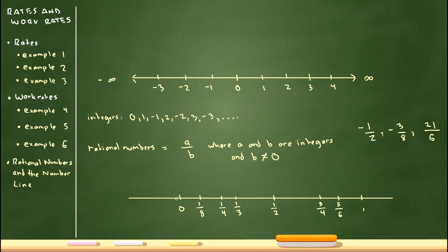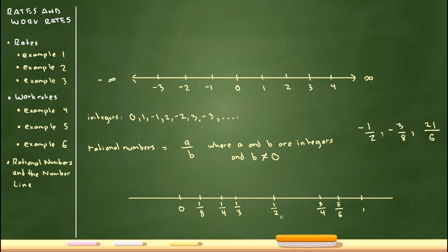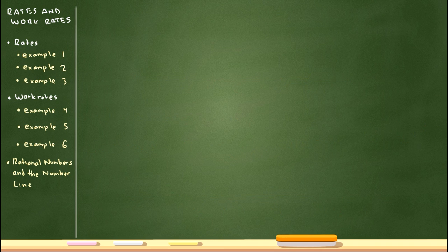There are infinitely many rational numbers between zero and one, and in fact between any two integers. The rational numbers fill in the number line nicely, though there are still a few gaps. Those gaps are filled by irrational numbers, which will be discussed in a later video. Examples of irrational numbers include pi, square root of two, square root of three, and square root of five.